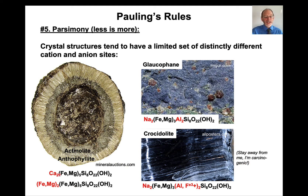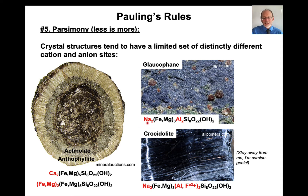There can also be substitutions into the larger octahedral site. If iron and magnesium substitute for calcium, we get anthophyllite. Sodium can also substitute into this larger site, but since sodium is +1 while calcium, iron, and magnesium are +2, charge balance is achieved by adding aluminum (+3) into the octahedral site, creating glaucophane. Substituting ferric iron — which has the same charge as aluminum — into that site gives crocidolite, the dangerous carcinogenic blue asbestos.